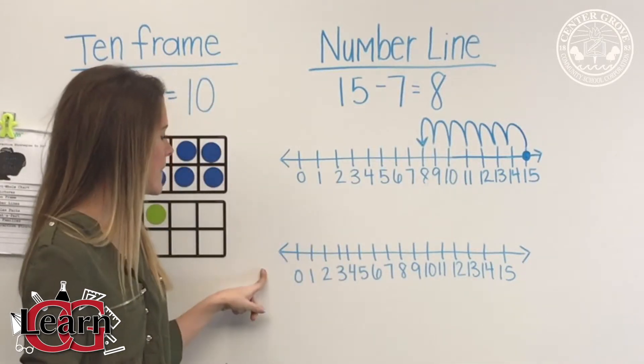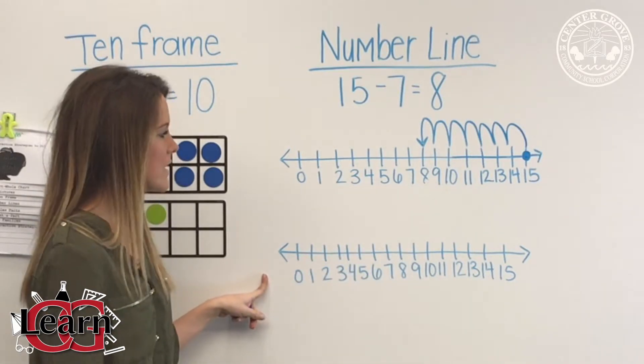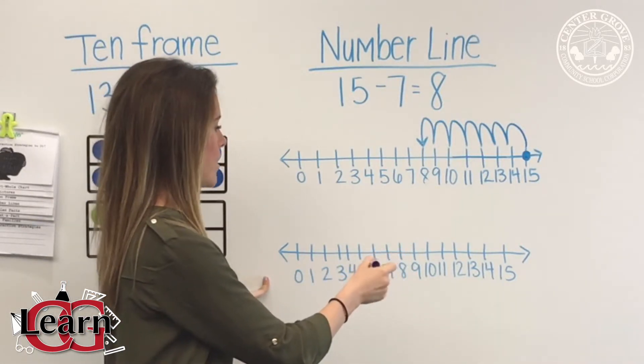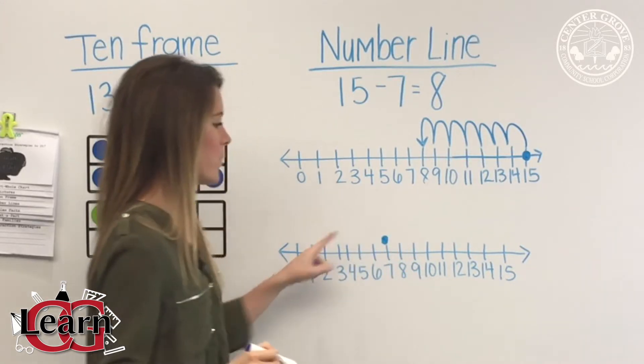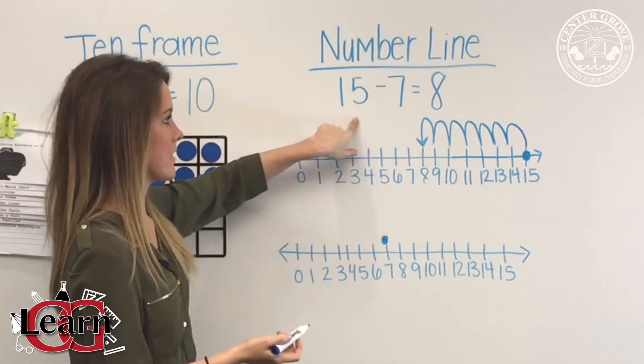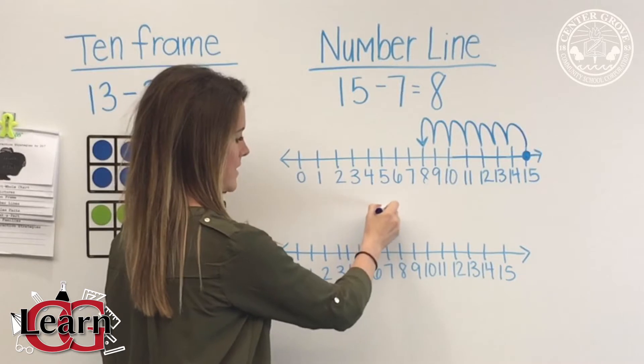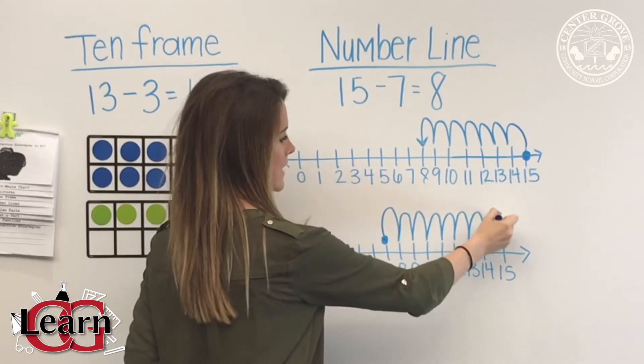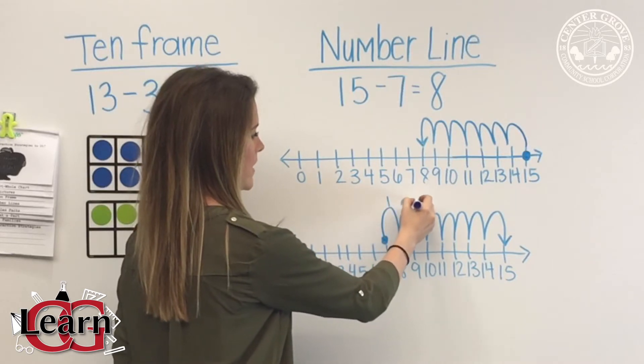Sometimes some of the kids will choose to go forward on the number line. It's kind of like counting up. So when we're going forward on the number line, we are going to start with 7, and then we're just going to make our camel humps until we get to 15. So far they may not know how many humps they need to make. They just know they need to go ahead and make their camel humps until they get to 15. And then again, make that arrow. And then I have them go and put numbers counting above each hump, 6, 7, 8. And that's how you know the answer is 8.